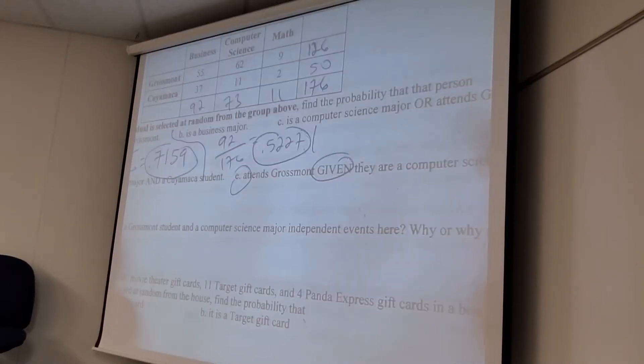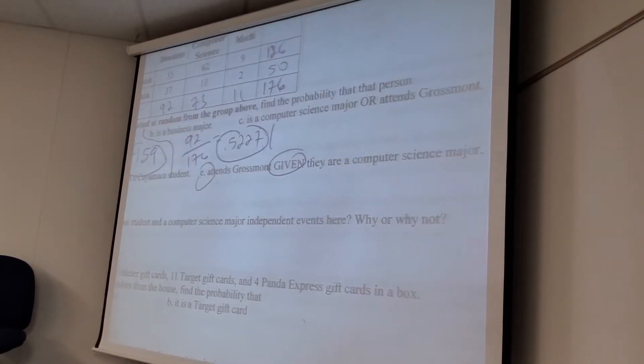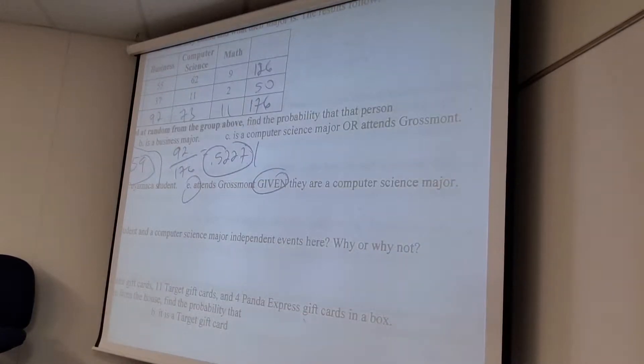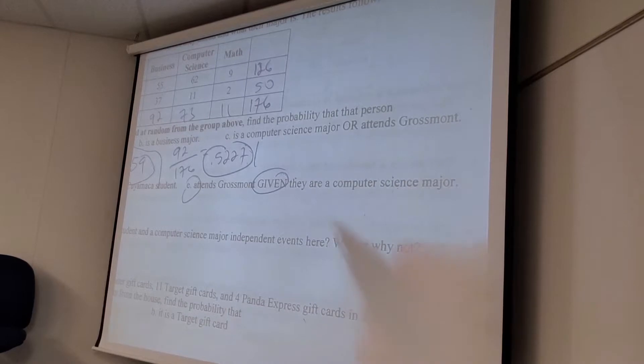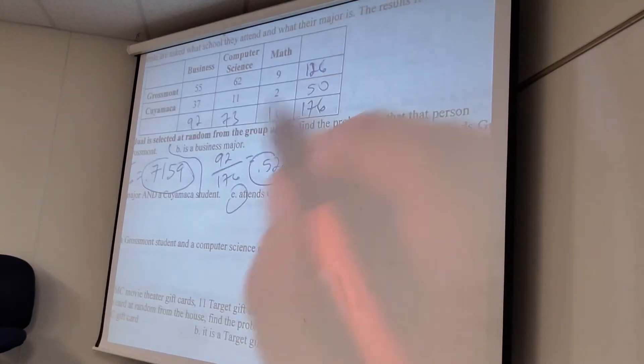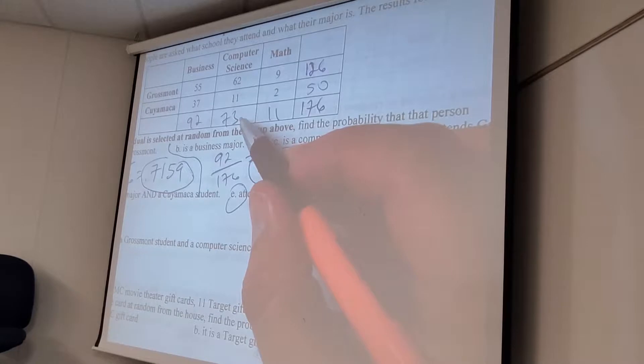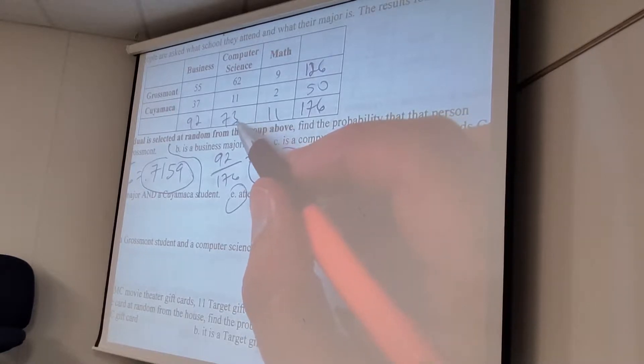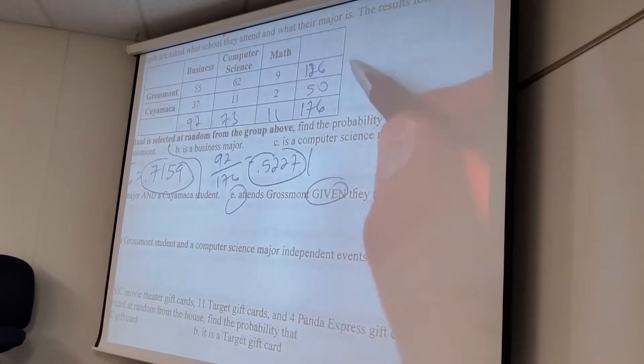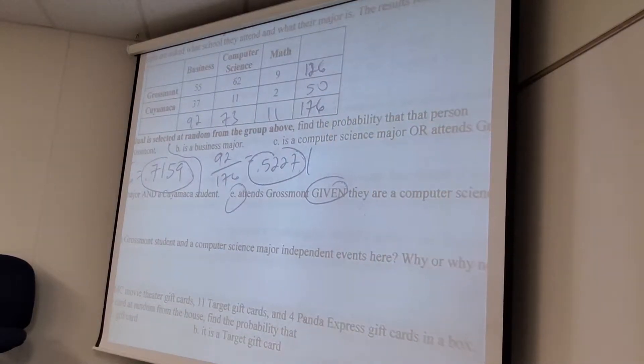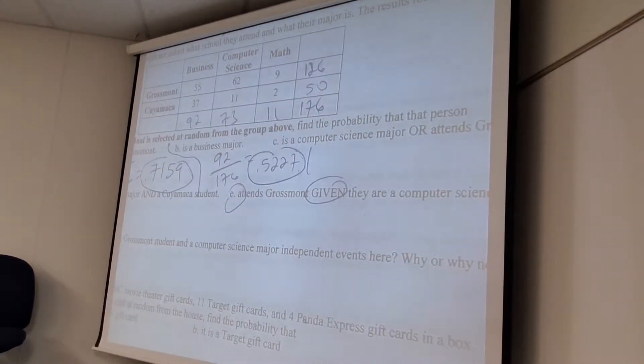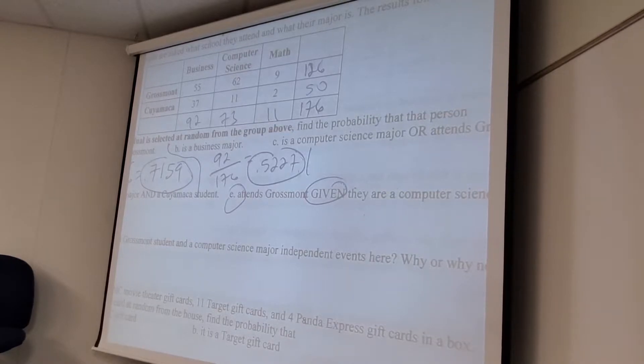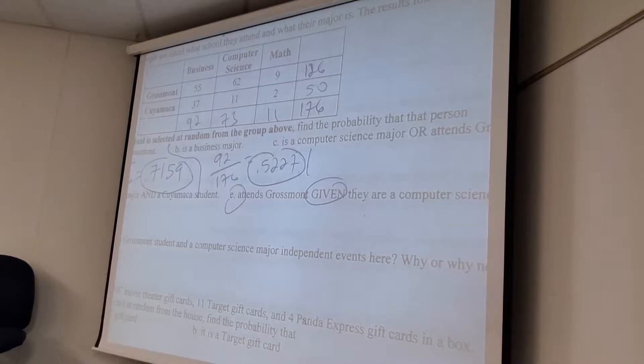Now here's our first little wrinkle in the mix. Or, so now the number of things that match what I'm looking for should increase. But if I do 126 Grossmont students plus 73 computer science majors, not only is that wrong, it's like extra wrong. Because then you're going to get 199 out of 176. That's bigger than one. How do you do that? You've created people, which I know humans can do, but not like this quickly.